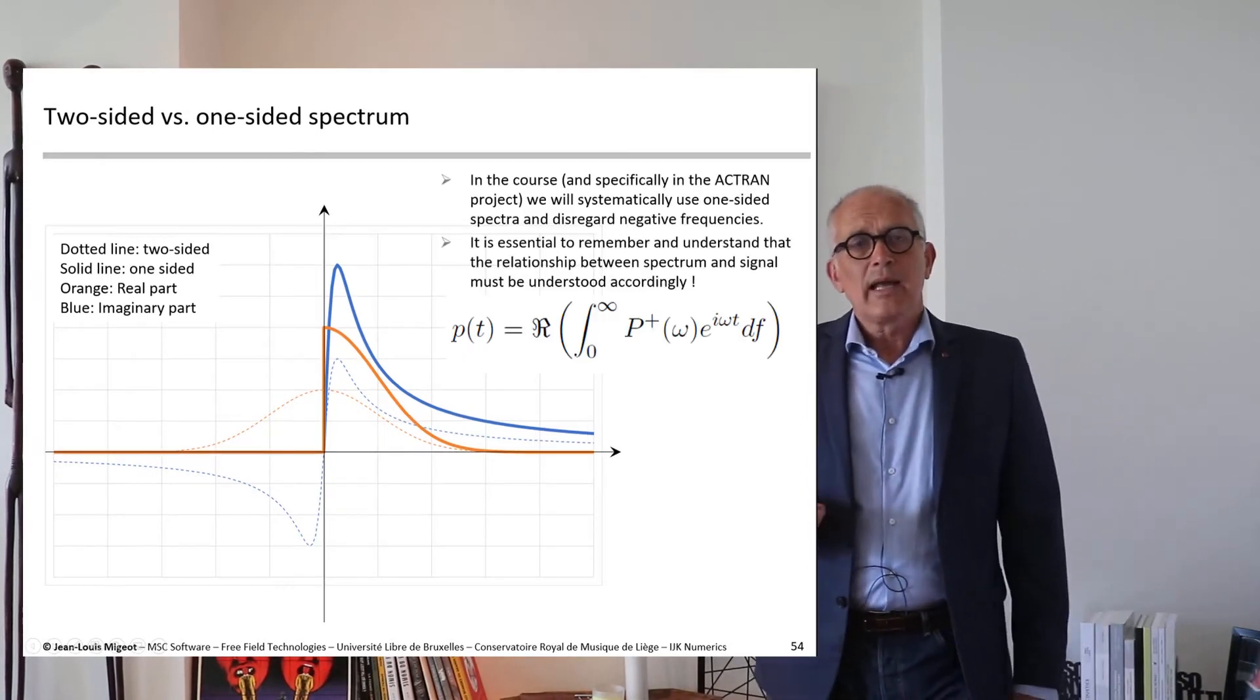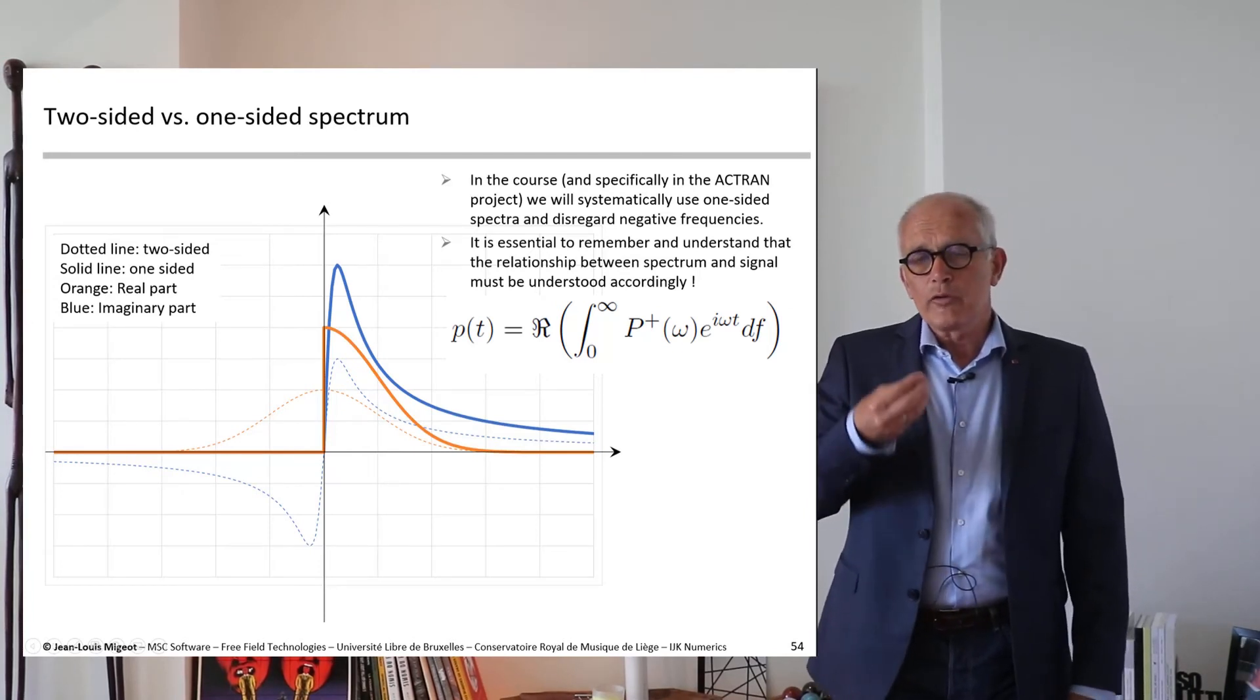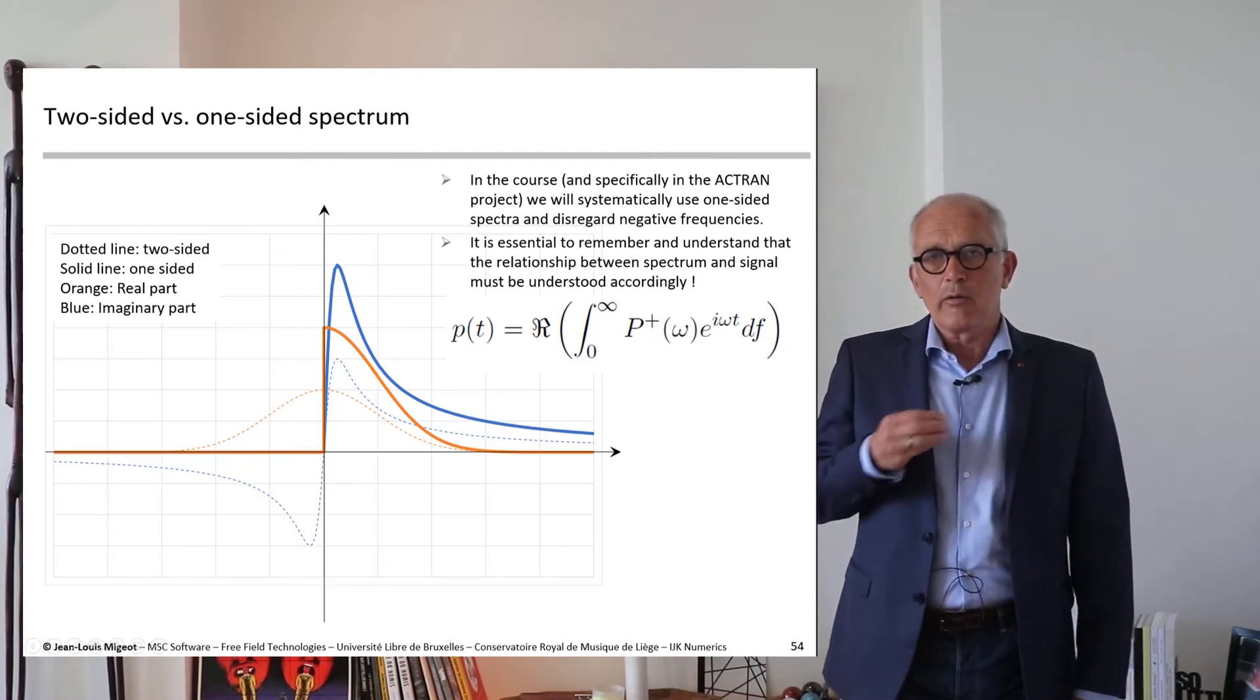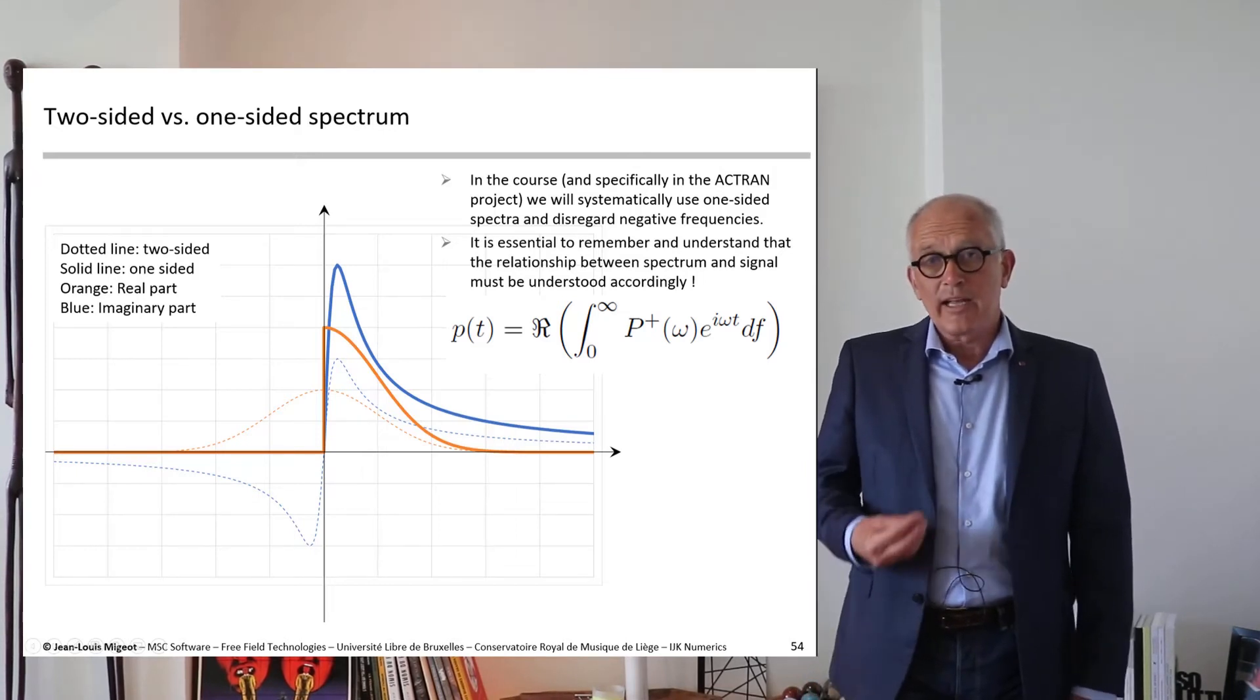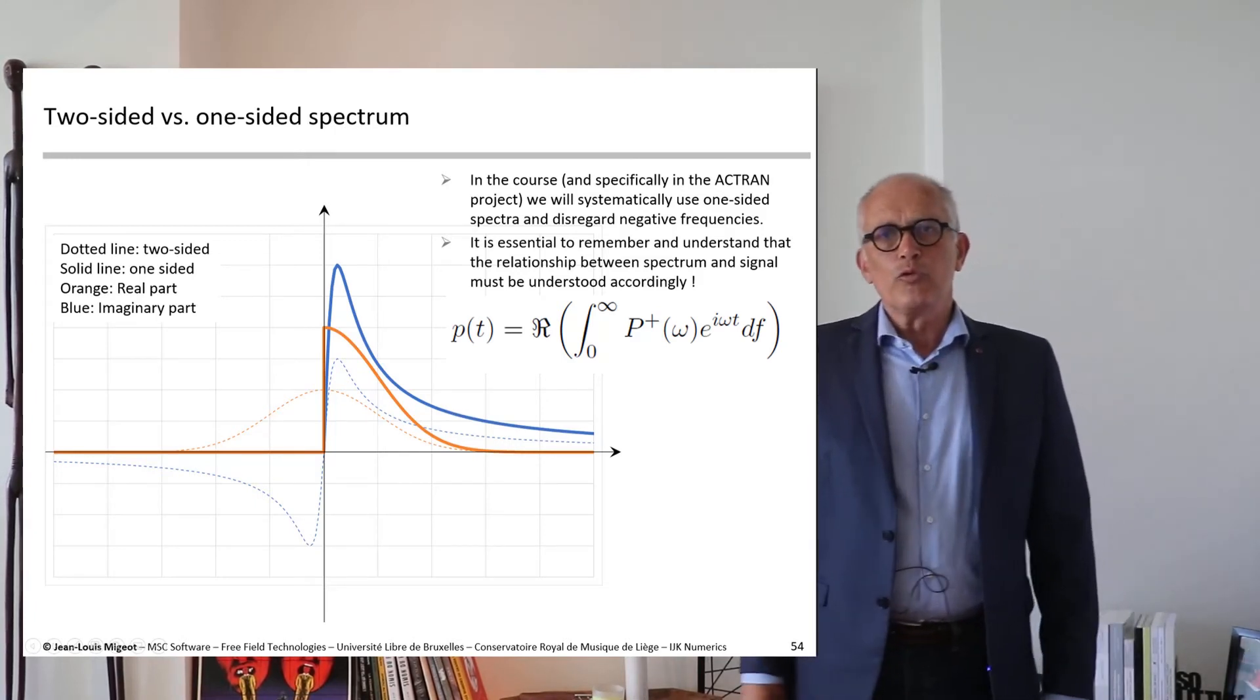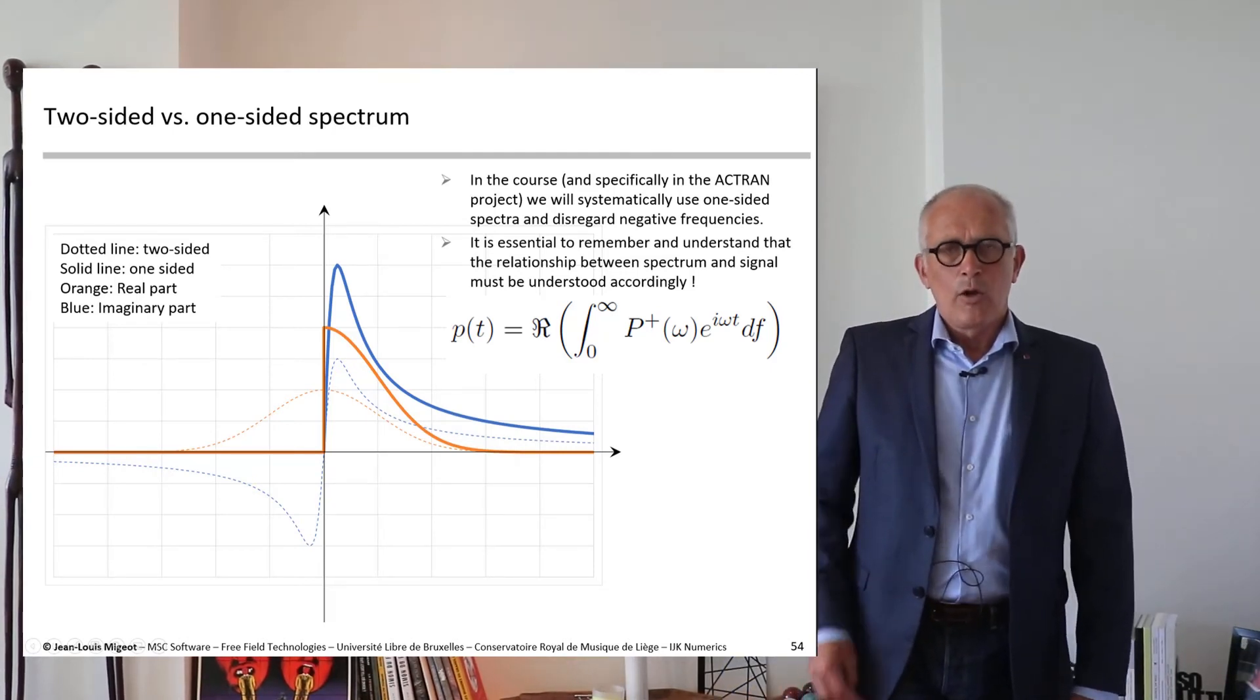And throughout the course, and specifically in the Actran project that we are going to run, we will always consider that the spectrum is one-sided, that we only have values for the positive frequencies, but that we have, of course, when we take the spectrum to regenerate a signal, we have to use the appropriate expression for the inverse Fourier transform.